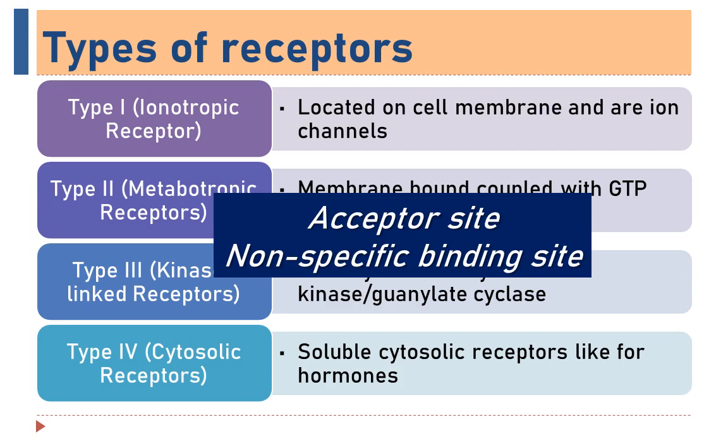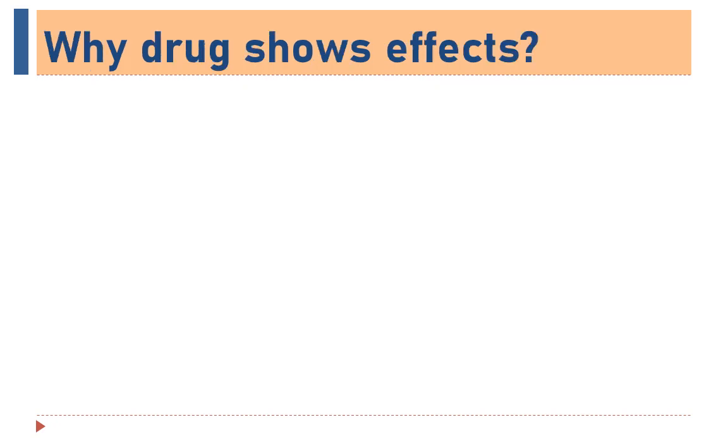Some of the drugs also bind with plasma proteins and don't produce any type of response. Such plasma proteins are nothing but acceptor sites or non-specific binding sites. Now the question comes in mind, why drug shows effect?